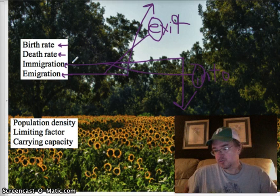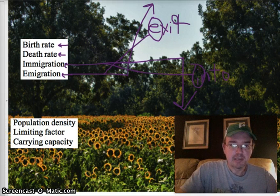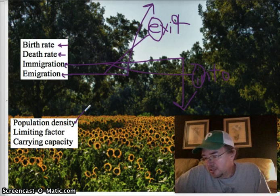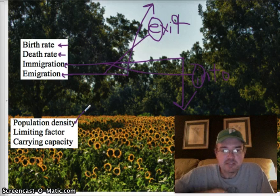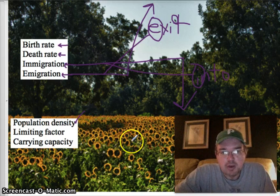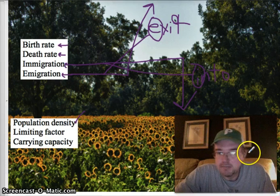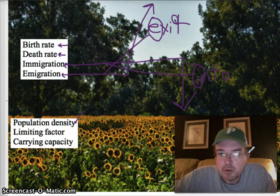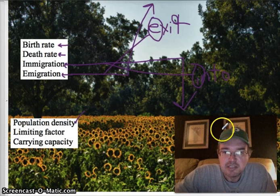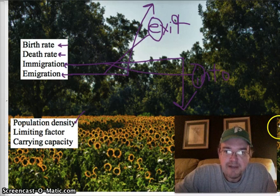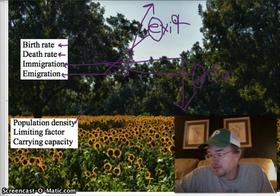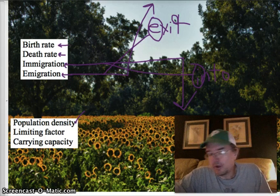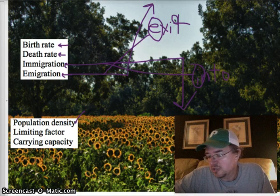There are some other terms to know. Population density is the number of individuals in a specific area — the number of organisms per unit area, like per square mile or per square foot. For example, there might be five sunflowers per square yard, three and a half butterflies per square foot, or ten foxes per square mile. That's what we're looking at with population density.